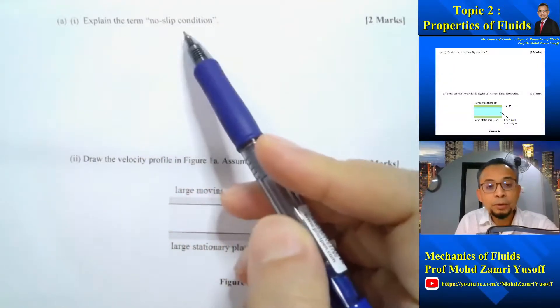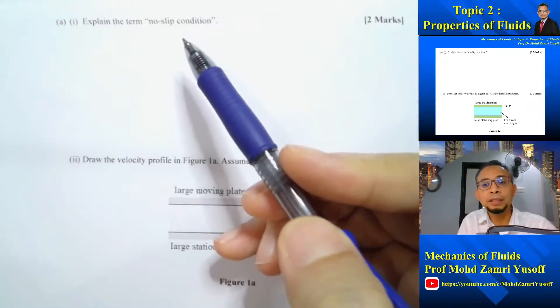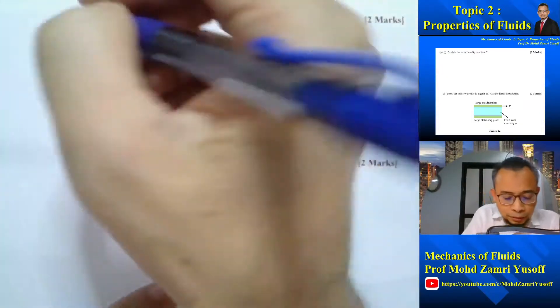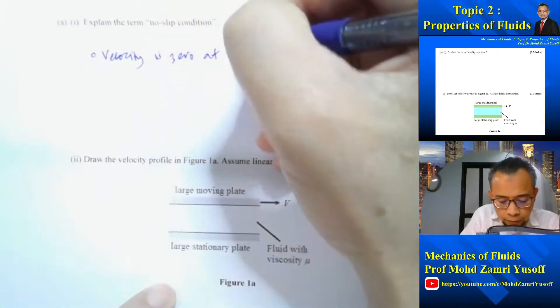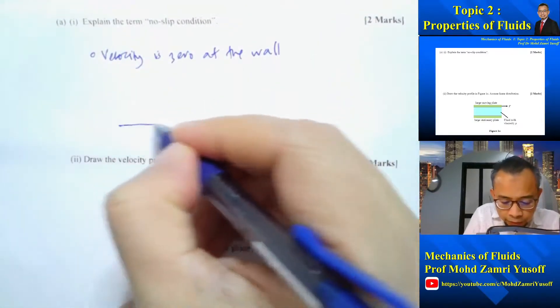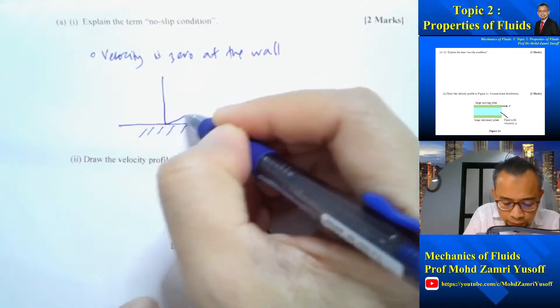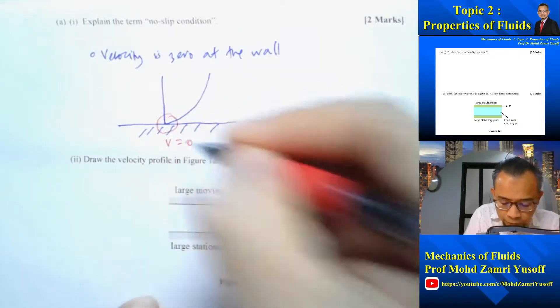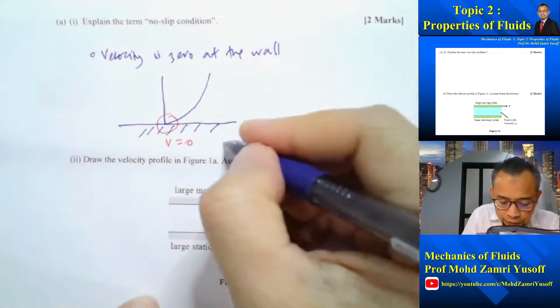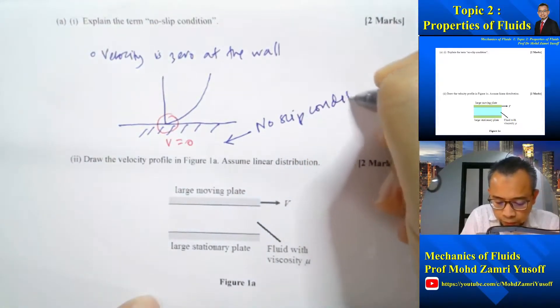Explain the term no-slip conditions. No-slip condition means that the velocity is zero at the wall. So if we have a flow close to the wall, the velocity is equal to zero at the wall. So this signifies no-slip condition.